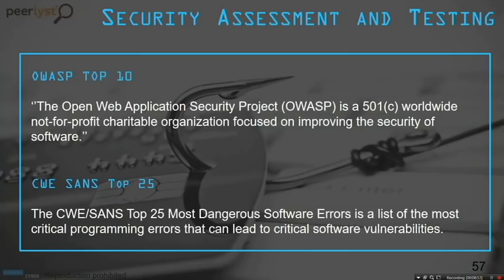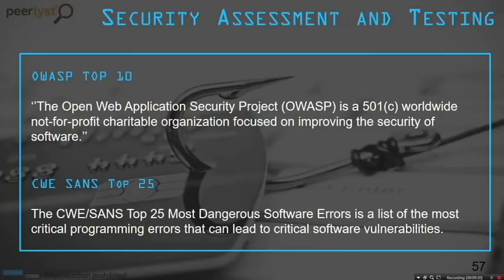OWASP — the Open Web Application Security Project — provides best practices for secure development. CWE/SANS Top 25 lists the most dangerous software errors. Even with developer training in secure coding, a third-party security assessment is still needed to provide a completely objective feedback about the state of the code.